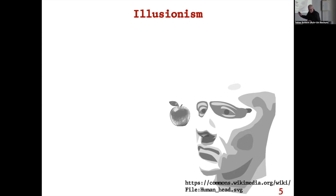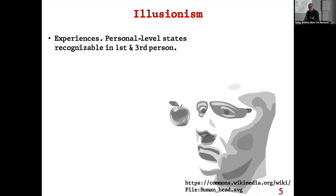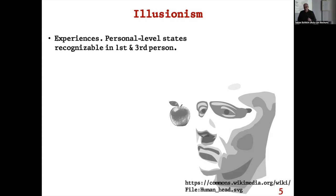Quick introduction to illusionism. Here we have a sad-looking person looking at an apple. I'm going to start with experiences — not with what-it-is-likeness or phenomenal consciousness. Experiences, which I take to be personal-level states recognizable in both the first person and the third person: states of seeing, smelling, tasting, hearing, feeling pain, and so on. We can all recognize them and categorize them.